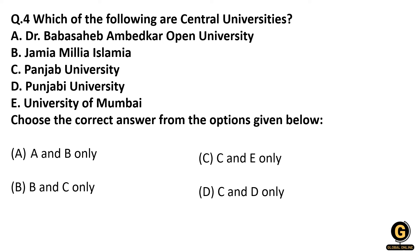The next question asks which of the following are central universities. You should know at least half the central universities and some famous state universities. Dr. Babasaheb Ambedkar Open University is in Gujarat — it is a state university. Jamia Millia Islamia in Delhi and Punjab University are both central universities. Punjabi University in Patiala and University of Mumbai are state universities. So the correct answer is B and C.